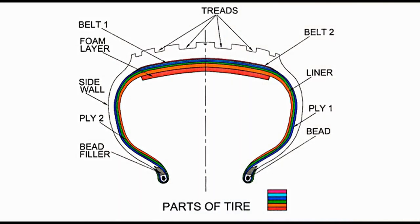Bead. This is a strand of wires twisted together to form the bead. It gives a circular shape to the tyre and also secures the tyre to the wheel. It can be seen in the lowermost portion of the tyre. To keep the tyre in position when inflation pressure is low, bead locks are provided in the wheel.